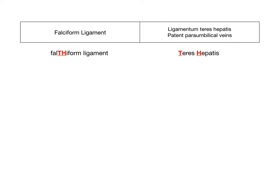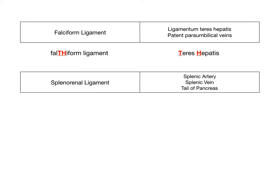The next one is the splenorenal ligament, which contains the splenic artery, the splenic vein, and the tail of the pancreas. The splenic artery and vein are straightforward because this is the only ligament with 'splen' in the name. The harder part is memorizing the tail of the pancreas — that's a high-yield association because it's the only part of the pancreas associated with any ligament.